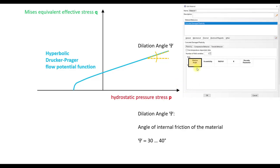First off, we have here the dilation angle. So what is the dilation angle? The dilation angle is the angle of internal friction of the material, and we have here the hyperbolic Drucker-Prager flow potential function.